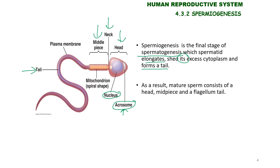On the other hand, in the midpiece, you can find a spiral-shaped mitochondrion. This mature sperm will then travel to the rete testis and move into the epididymis.